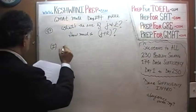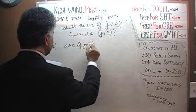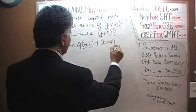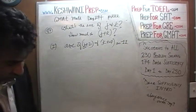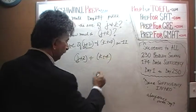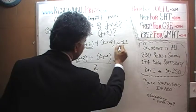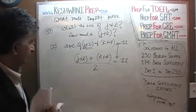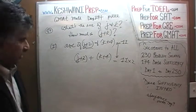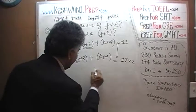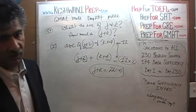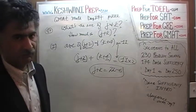In the first statement, they tell us that the average of (J plus 2) and (K plus 4) is 11. How do we find the average of two quantities? We take J plus 2, add K plus 4, and divide by 2 — and that equals 11. Multiplying both sides by 2, we find that (J plus 2) plus (K plus 4) equals 22. We can figure out J plus K — it is simply 22 minus 6. Once we know J plus K, we can figure out the average. The first statement by itself is quite sufficient.